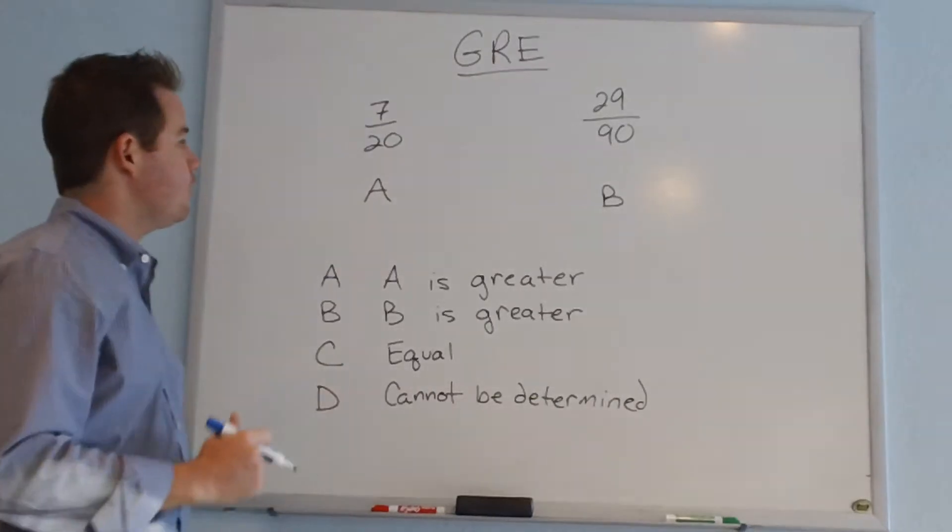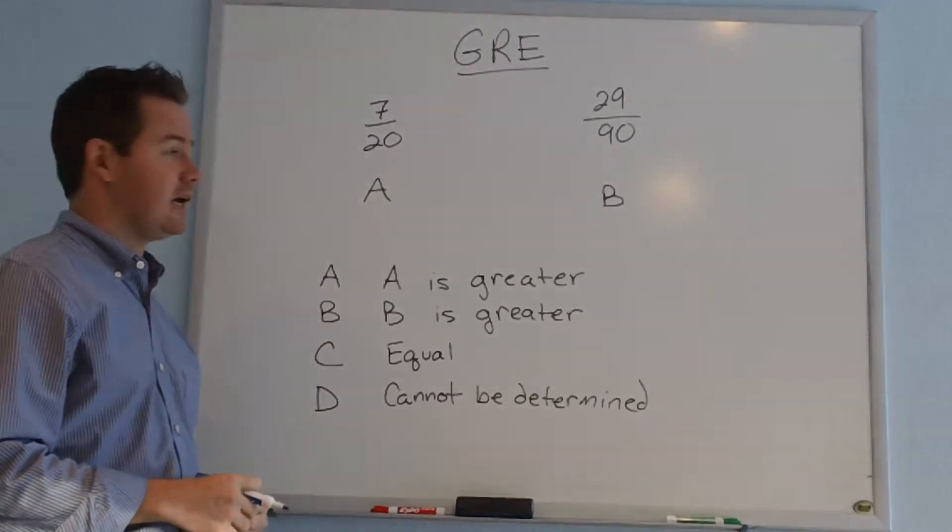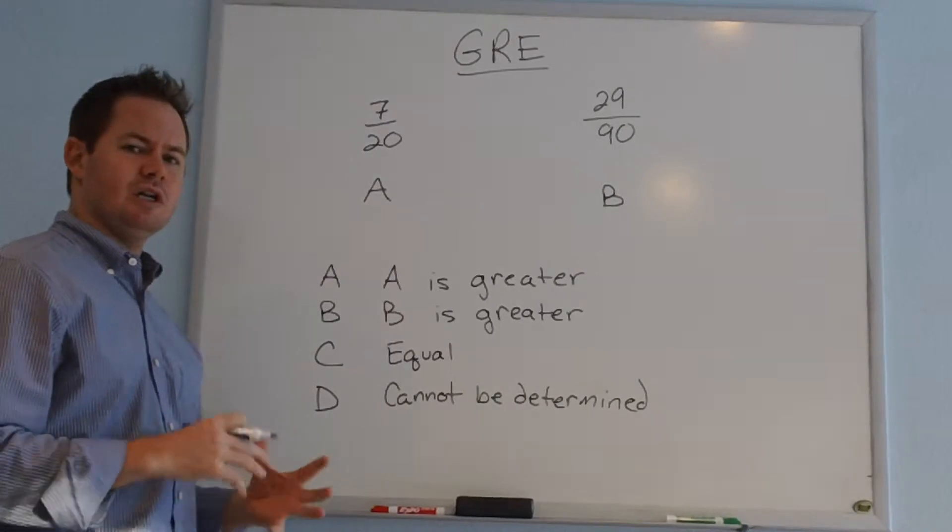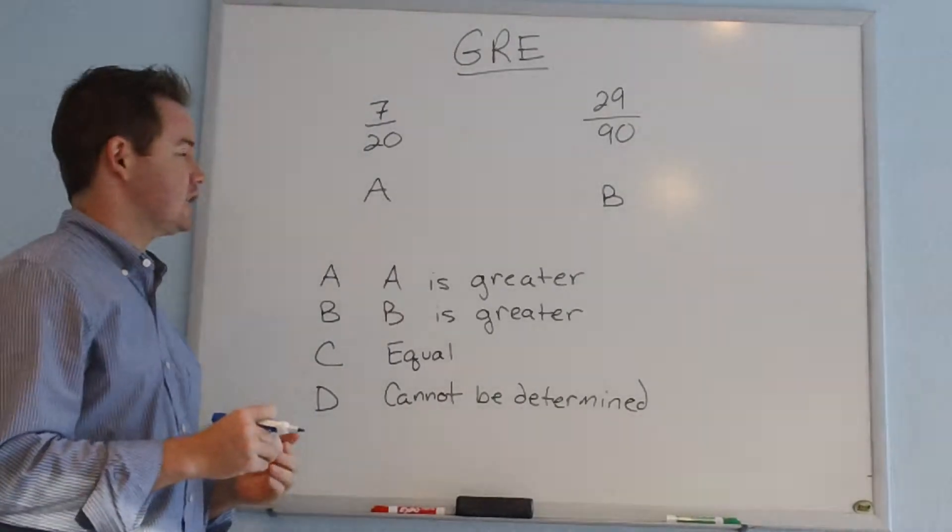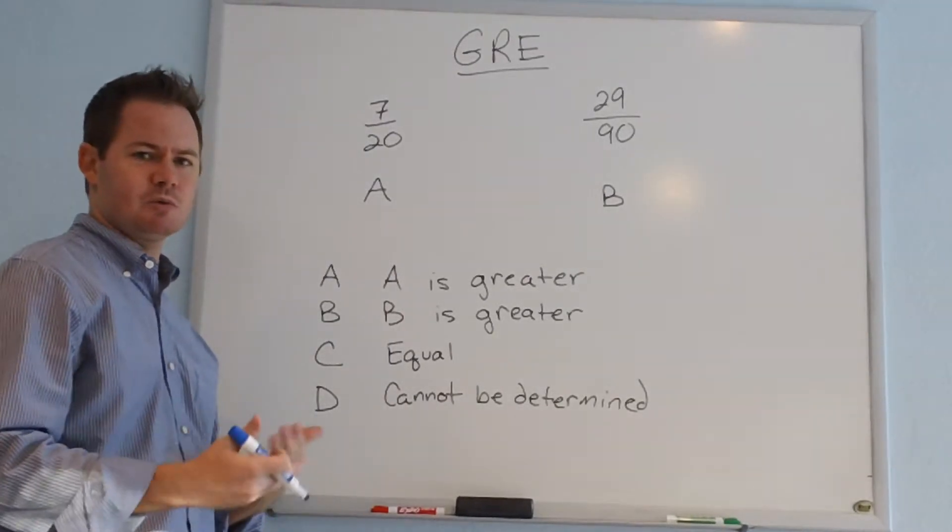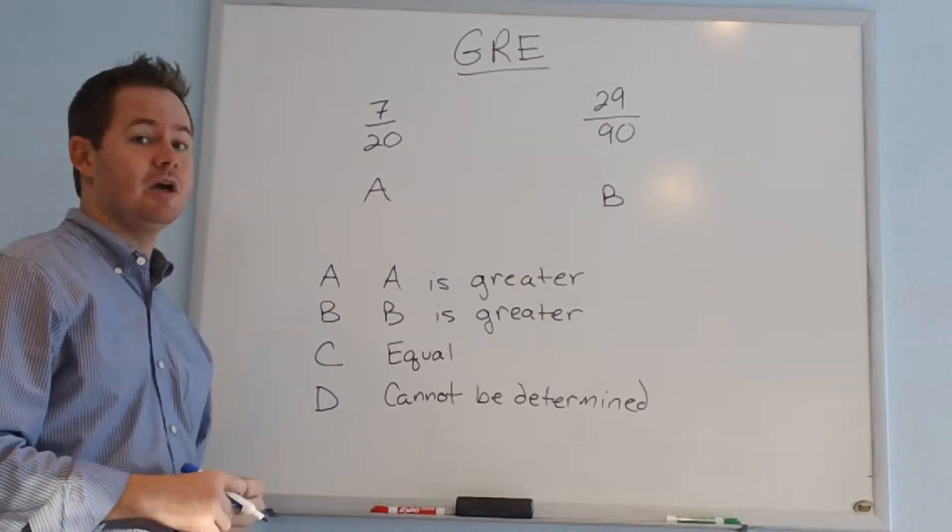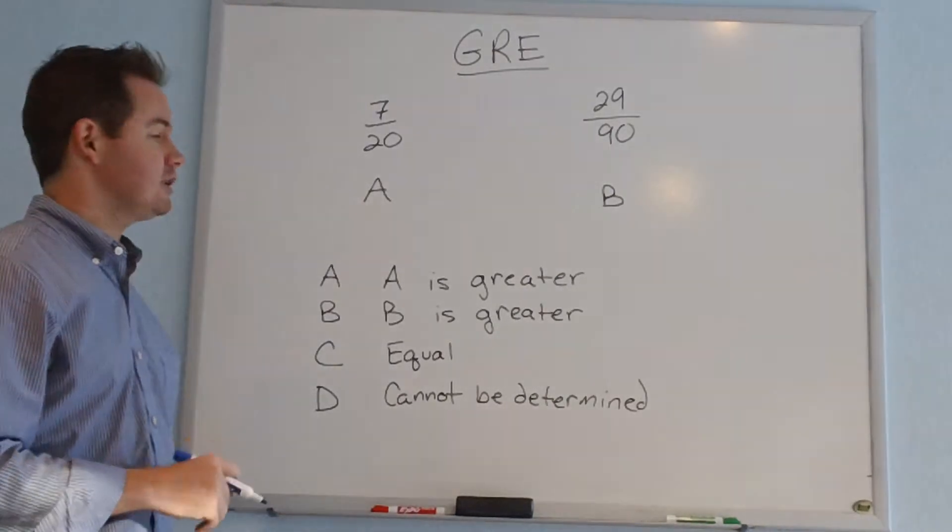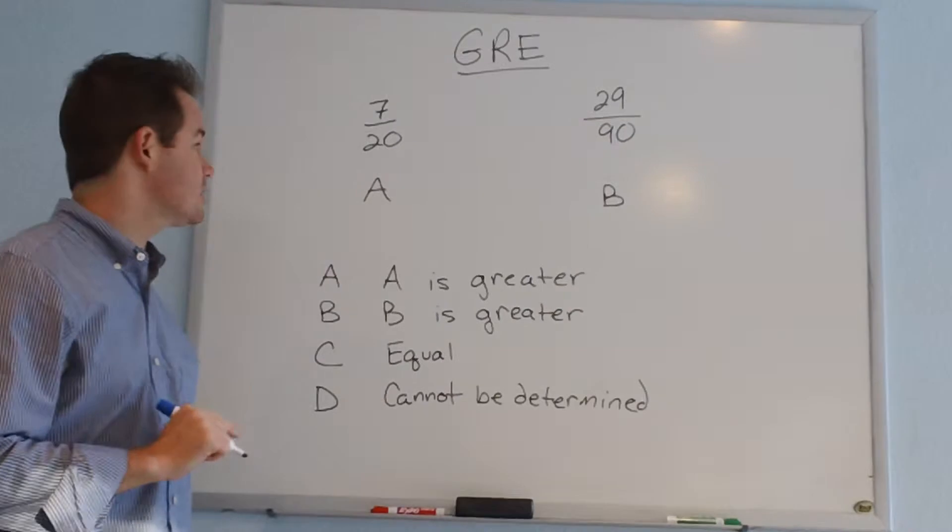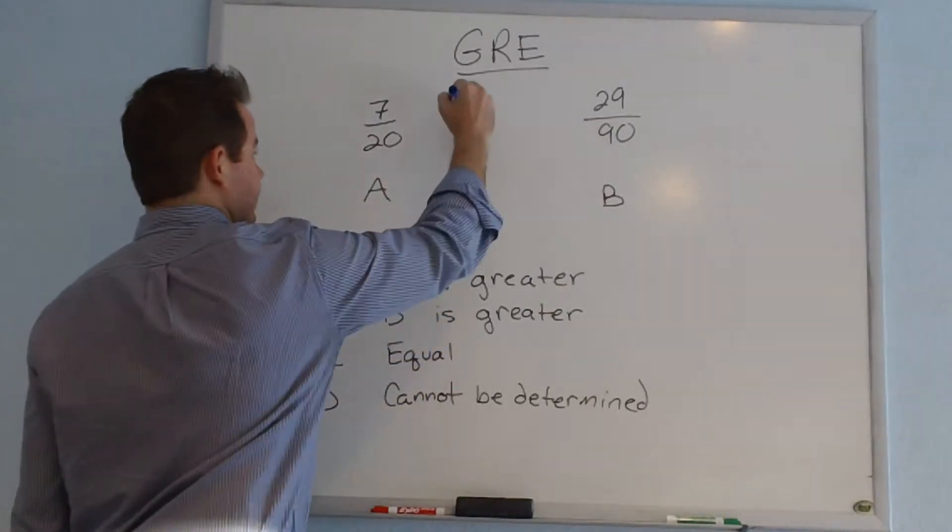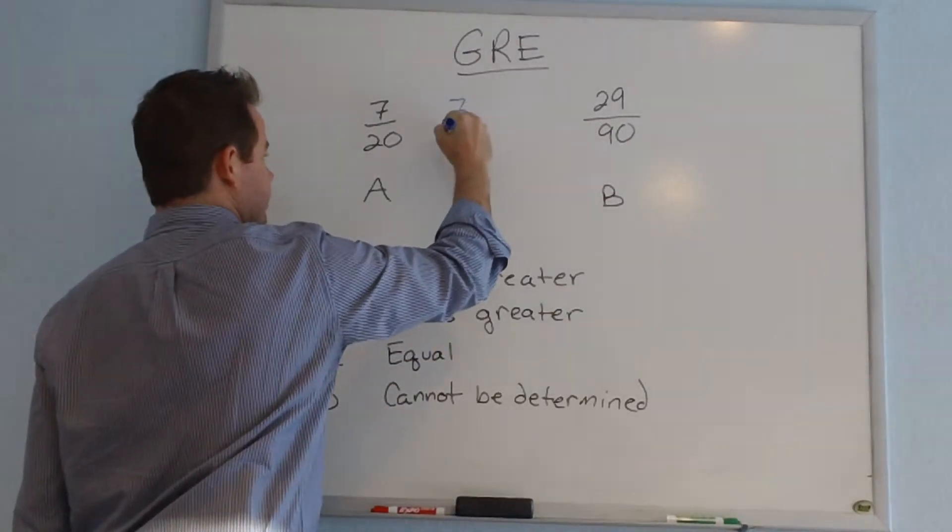For column A, 7 over 20 is a fraction that we can't reduce, and it looks like it might give us a complex decimal if we were to try to actually divide it out. But there is a fraction that we can reduce that is very close to 7 over 20, and that would be 7 over 21.